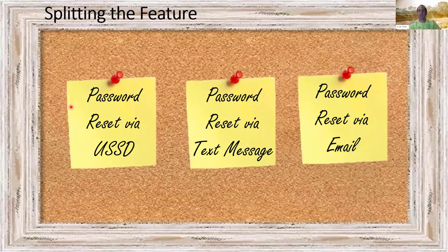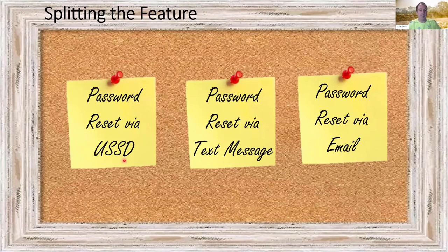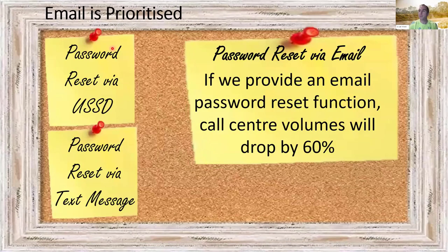To expand on this further: for a simple system with three password reset options — email, text message, and USSD (USSD is that monochrome pop-up screen on your mobile phone, very popular in countries like Kenya for banking) — we'd have a discussion with our product owner about what's most important, and with the team about what's most complex. Keeping it simple, let's say email is most important and easiest to do. We've adjusted the hypothesis drop to 60%, with the inference that the remaining 30% will come from the other two options. We put our energy into delivering password reset via email.